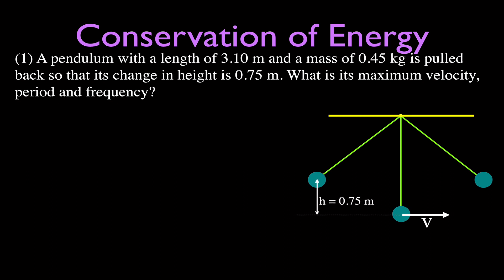We're going to use conservation of energy. This pendulum has a change in height of 0.75 meters — that's the height from the equilibrium position to the maximum displacement. Conservation of energy tells us that the total mechanical energy, the sum of the potential and kinetic energies, always remains the same. We have the greatest potential energy at greatest displacement and the greatest kinetic energy as it swings through the equilibrium position.